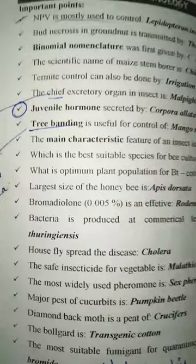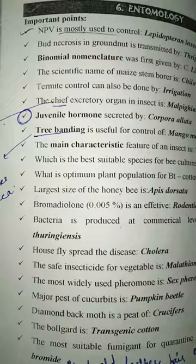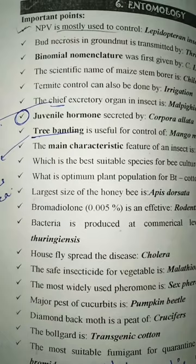Next is about bud necrosis. Bud necrosis is a type of disease which usually occurs in groundnut, and that disease is transmitted by thrips.